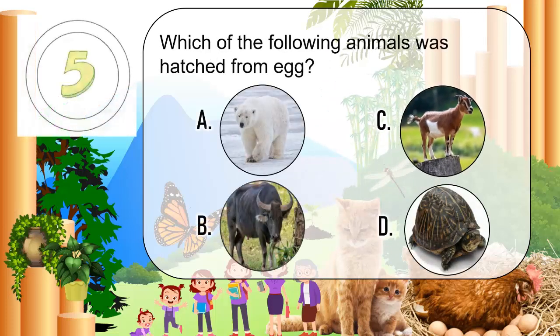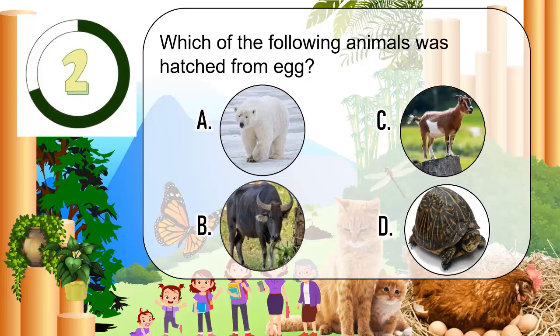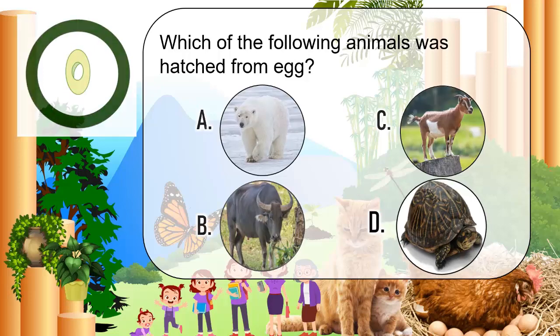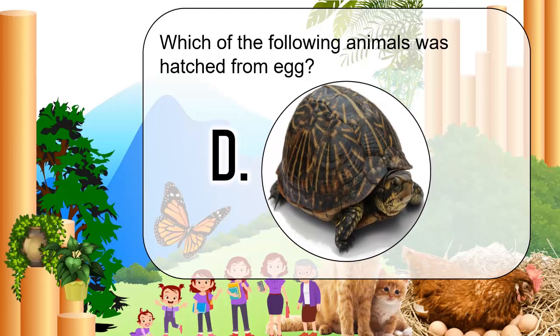Which of the following animals was hatched from egg? The correct answer is D. Turtle.